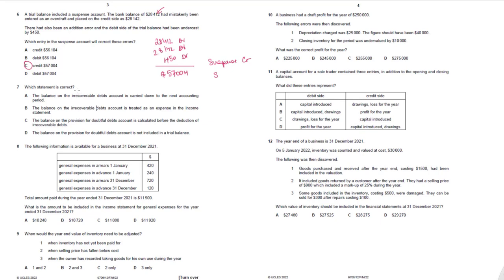Which statement is correct about irrecoverable debts? The balance on the irrecoverable debts account is not carried down — it is transferred to the income statement at the end of the year as an expense. The balance on the provision for irrecoverable debts is calculated after deducting irrecoverable debts from debtors first. The provision for doubtful debts does have a credit balance and is included in the trial balance. So the correct answer is 7B.